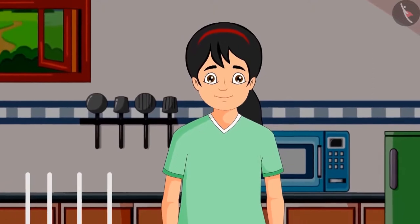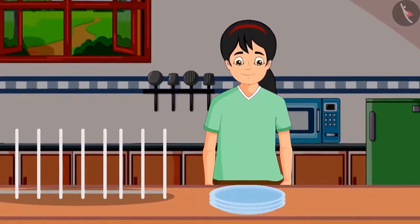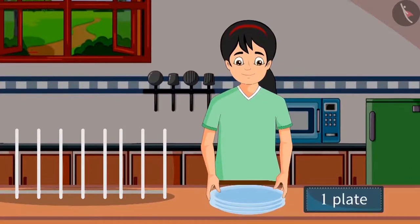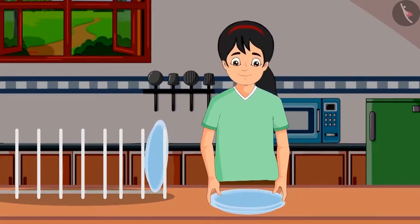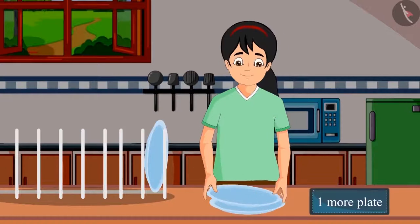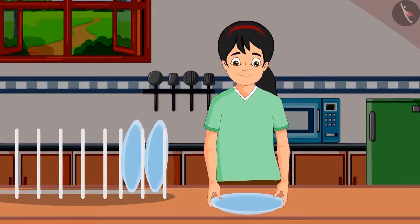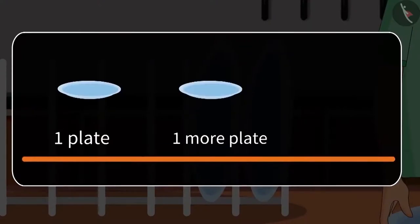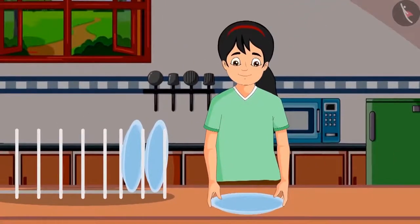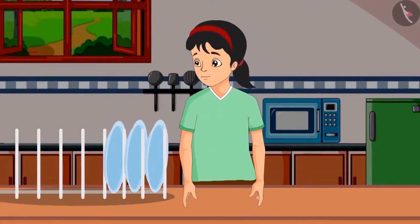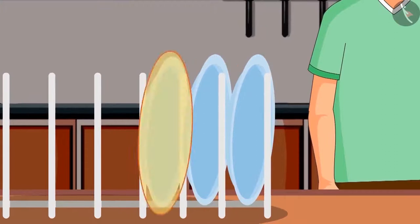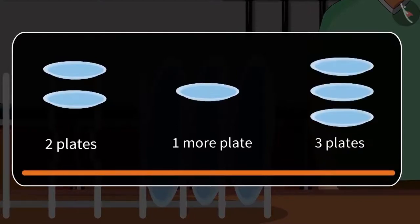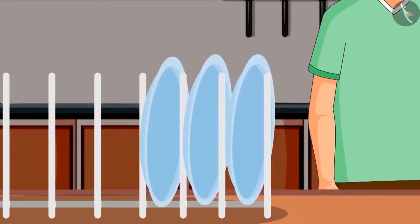Today Pinky's mother is unwell, so Pinky has thought of helping her mother set the plates in the kitchen. She picked up one plate and set it carefully on the shelf. Very carefully she picked up one more plate and set it on the shelf too. One plate and one more plate is two plates. She saw one more plate and set it on the shelf too — two plates and one more plate is three plates. In total there are now three plates on the shelf.